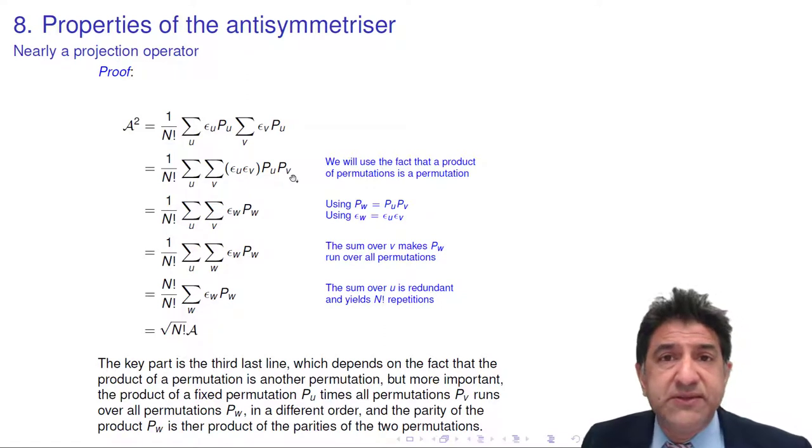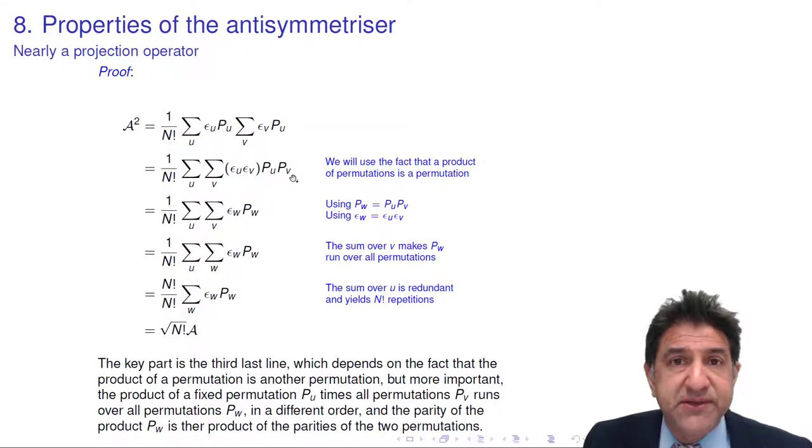For example, if I have three objects and I permute them in all possible ways, that would be six permutations. If I now decide to permute the first two of them in all six of those, I will end up with six different permutations in a different order.